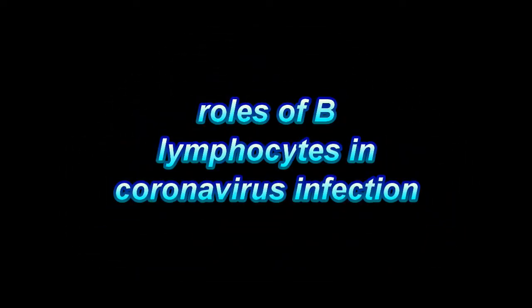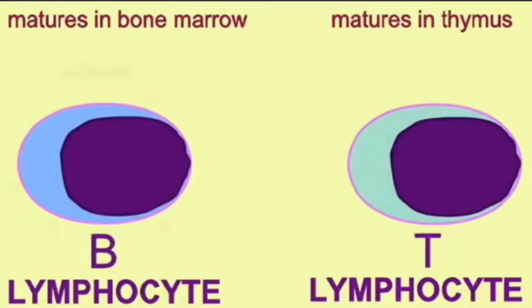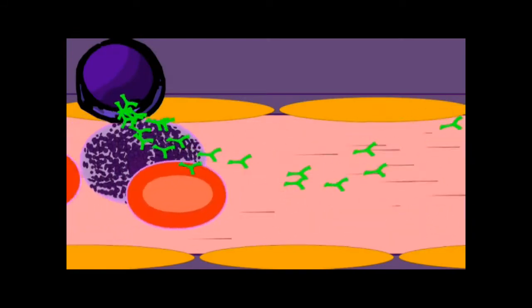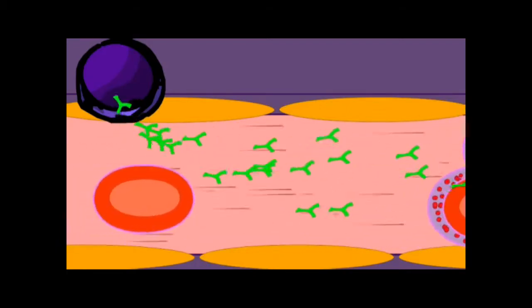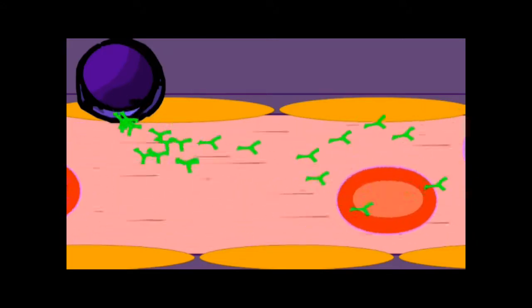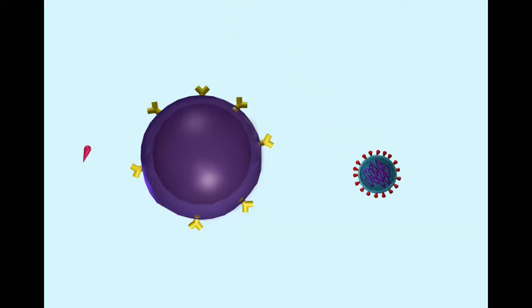B lymphocytes are those lymphocytes which mature in the bone marrow, as opposed to the thymus, and they produce proteins known as antibodies that can be secreted. This makes the immunity they confer humoral — referring to the Greek word humor for liquid — because liquid which lacks cells, as long as it has antibodies, can actually confer immunity. It is these B lymphocytes which produce the antibodies that confer this humoral immunity.